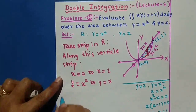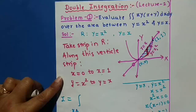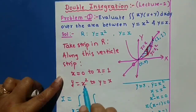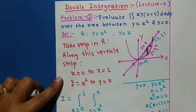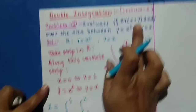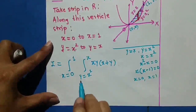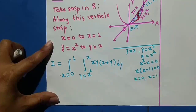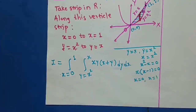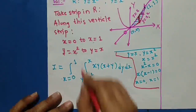Our integral I can now be written with constant limits on the outside. We take the outer integration with respect to x from 0 to 1, and the inner integration with respect to y from x² to x. The integrand is xy(x + y), so we write dy first and then dx.